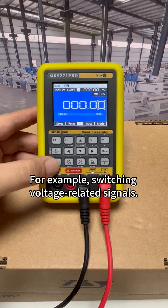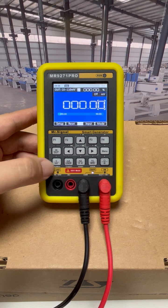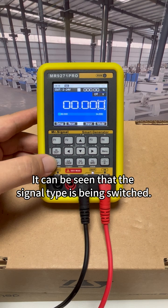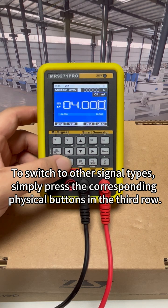For example, switching voltage-related signals. Press the varm button to cycle through the options. It can be seen that the signal type is being switched. To switch to other signal types, simply press the corresponding physical buttons in the third row.